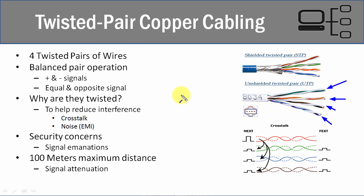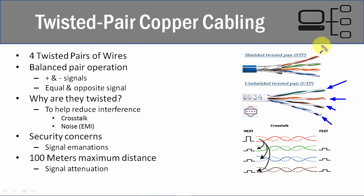You'll notice that they are color coded differently — one of them has stripes and one doesn't. With each pair, there's going to be a positive and negative electronic signal, and they balance each other out and complete a circuit. That's why there's a positive and negative for each one.